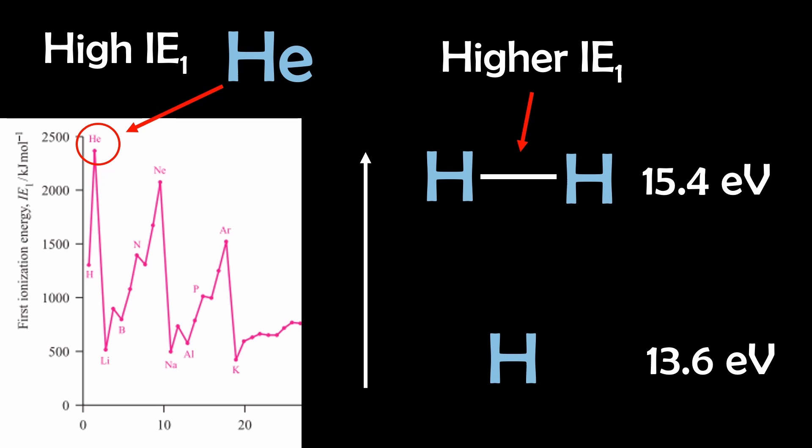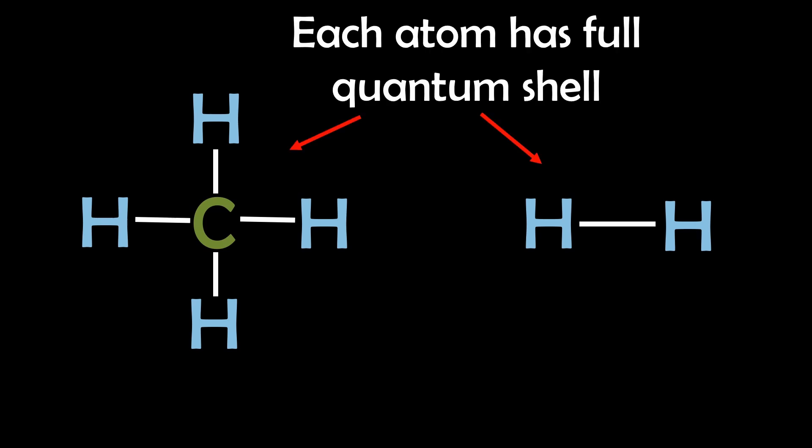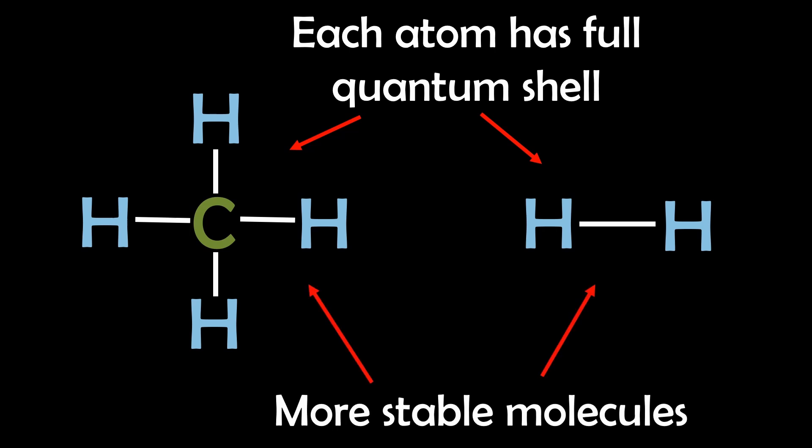And while an atom with a noble gas configuration is not necessarily a noble gas, it may still exhibit a higher ionization energy similar to that of noble gases. So carbon having 8 electrons or hydrogen having 2 electrons in their outer shells result in more stable molecules.